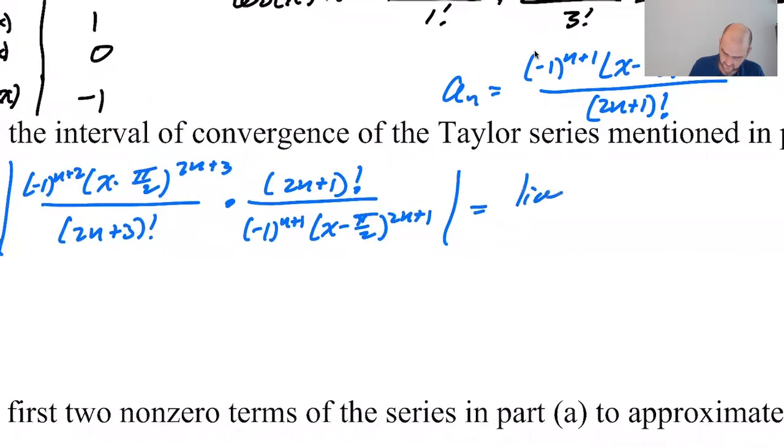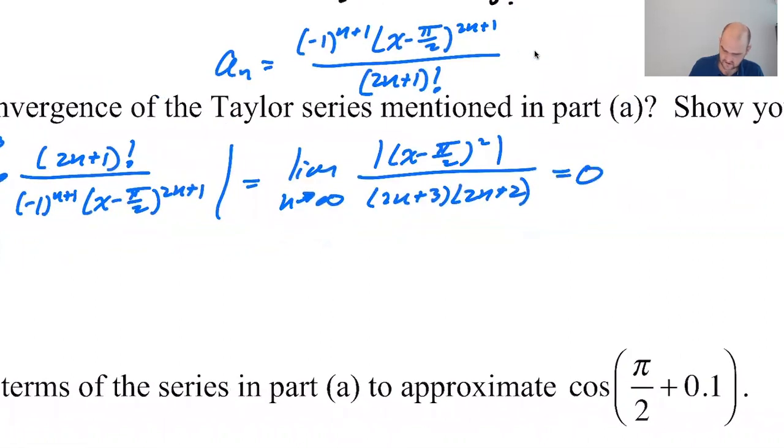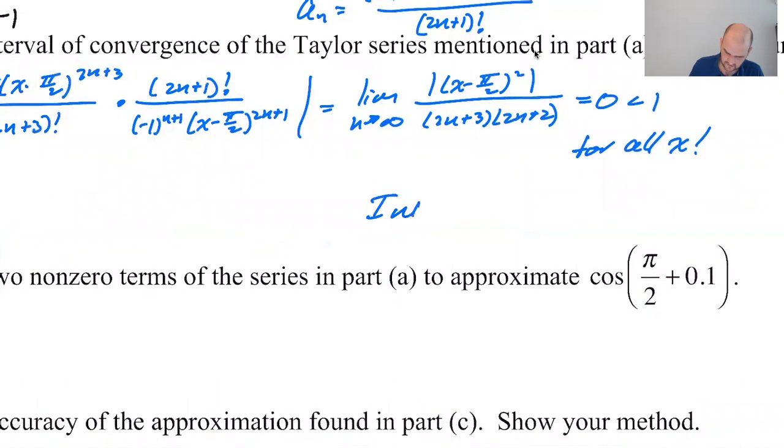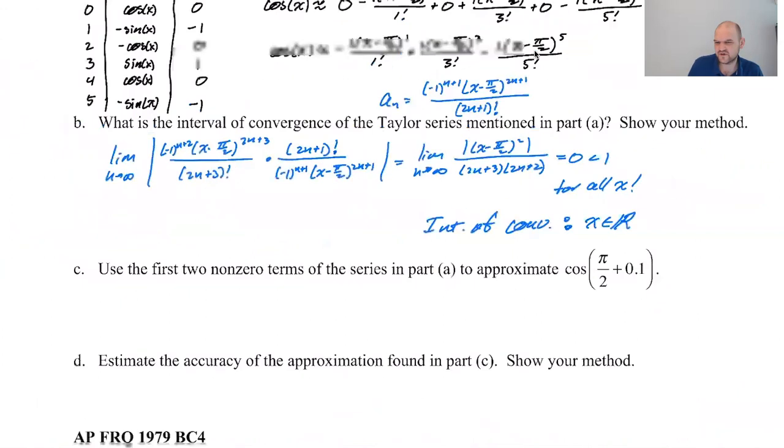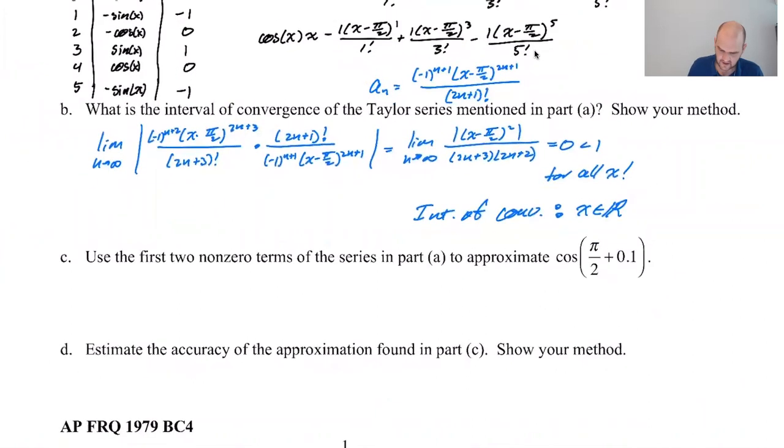So this will give me the limit as N approaches infinity absolute value of X minus π/2. Well, it's actually squared. So you don't really need the absolute value, but whatever. And then 2N plus three, 2N plus two, and then 2N plus one factorials cancel zero less than one for all X. So interval of convergence is X is an element of the reals, which we knew because it's just cosine.